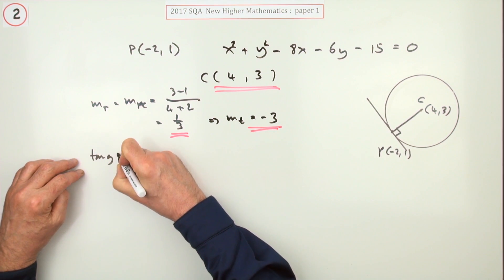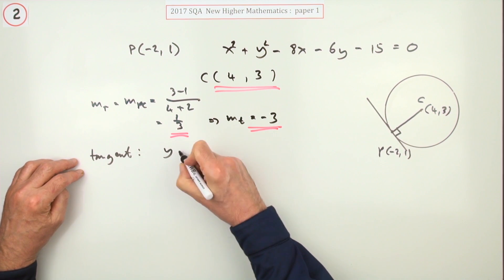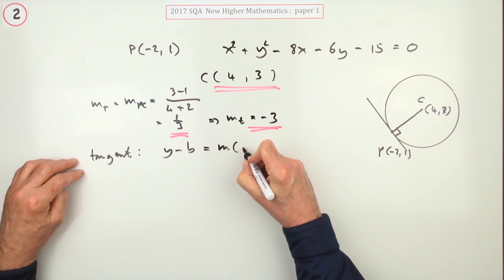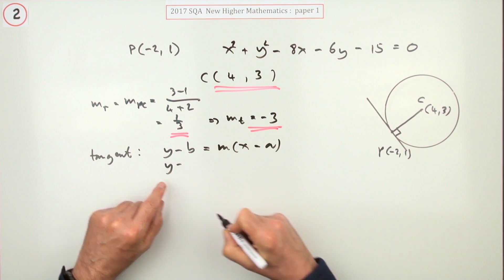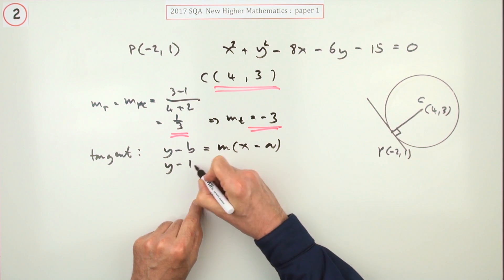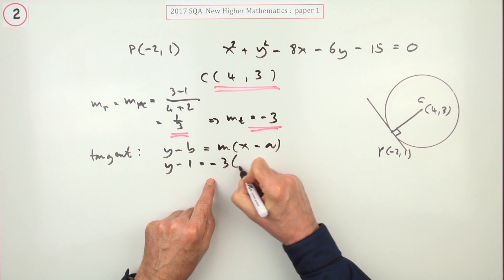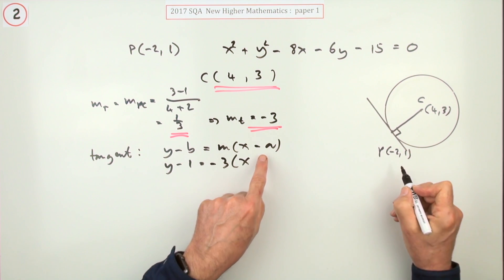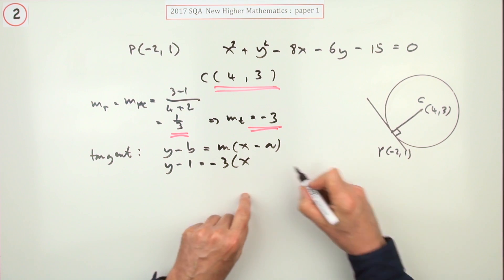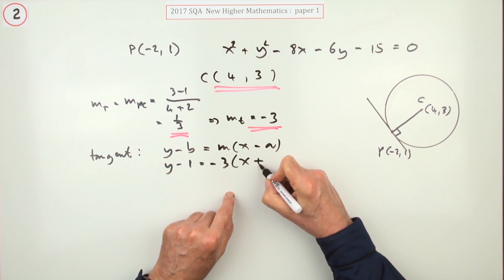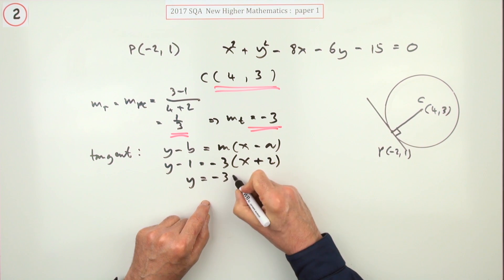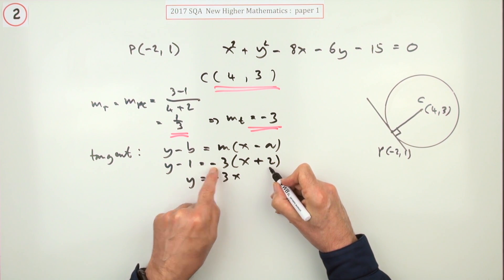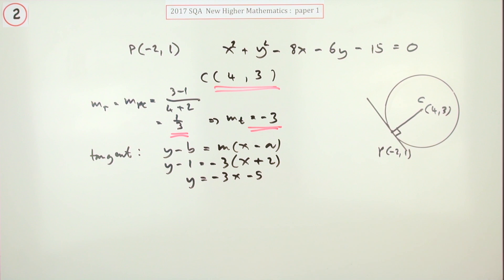Now you've just got to put it together. So what is the equation of this tangent? Using y minus b is mx minus a, because I don't know where it cuts off the y-axis. It'll be y minus the y-coordinate of the point, which is 1, is the gradient, which is negative 3, times x minus the x-coordinate of the point, which is a negative 2. So instead of subtracting negative 2, I'll go in with plus 2. Just rewrite that as negative 3x minus 6, but plus 1, minus 5.